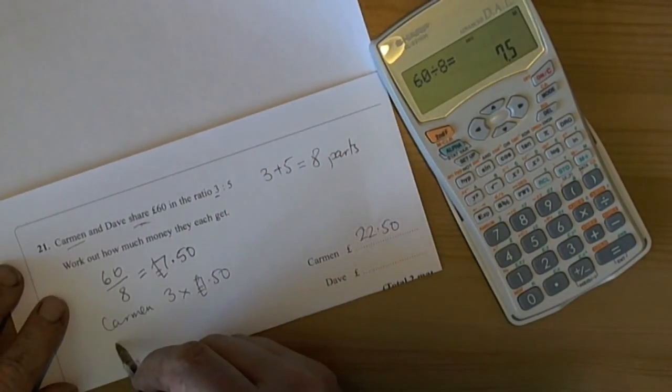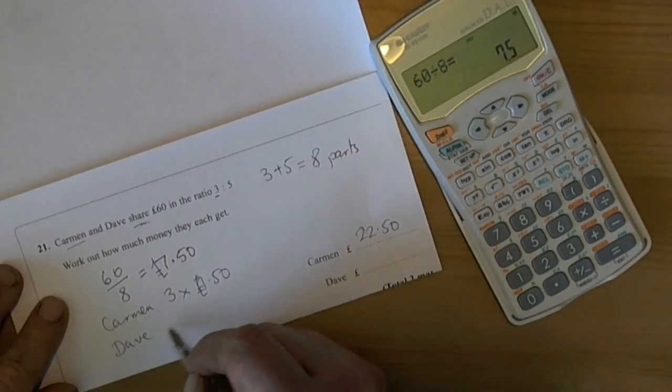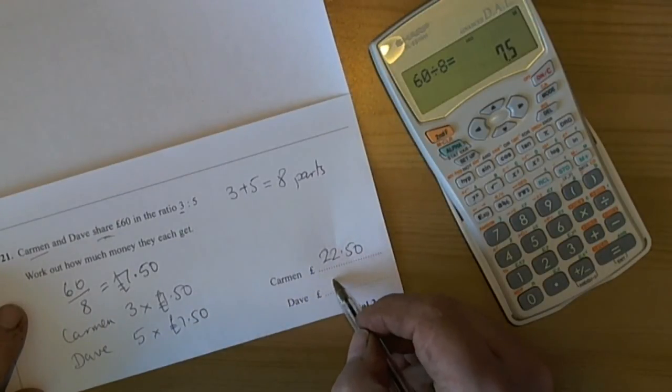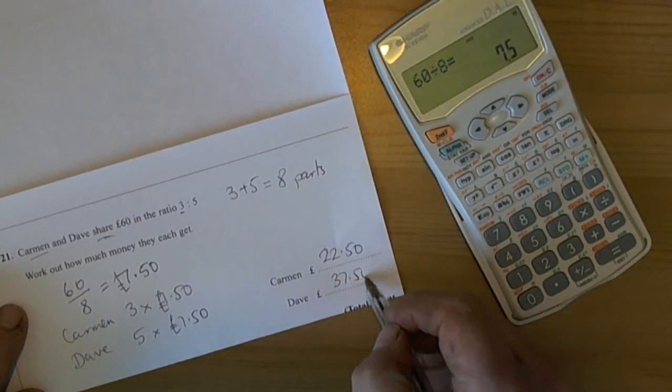And for Dave, he got 5 parts. So 5 times the 7 pound 50. So he's going to get 37.50.